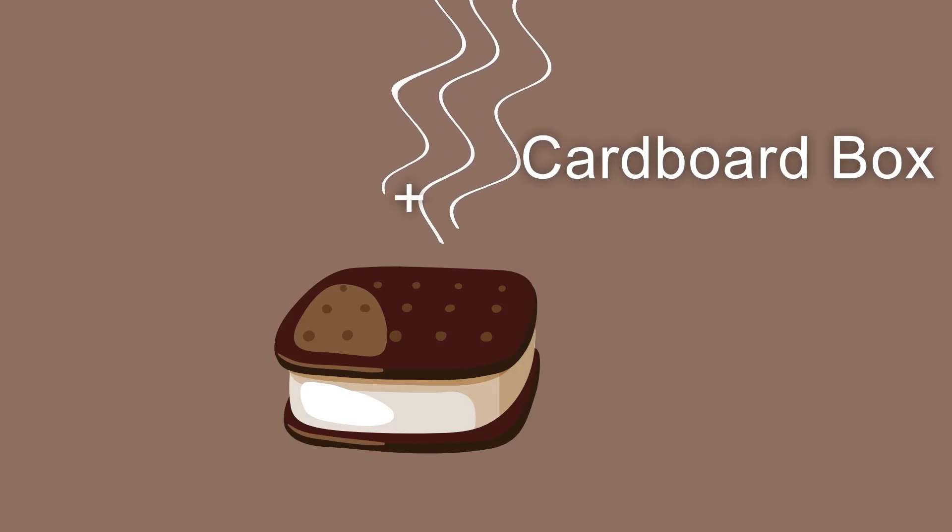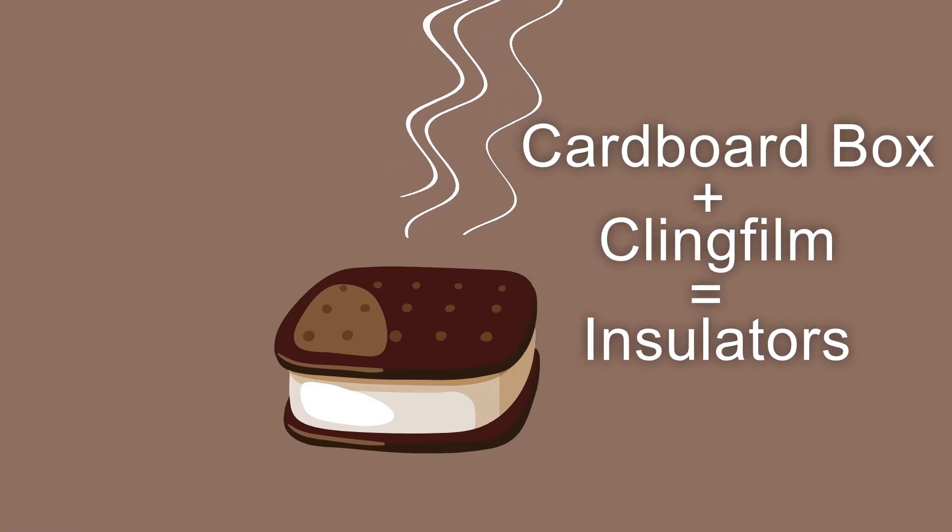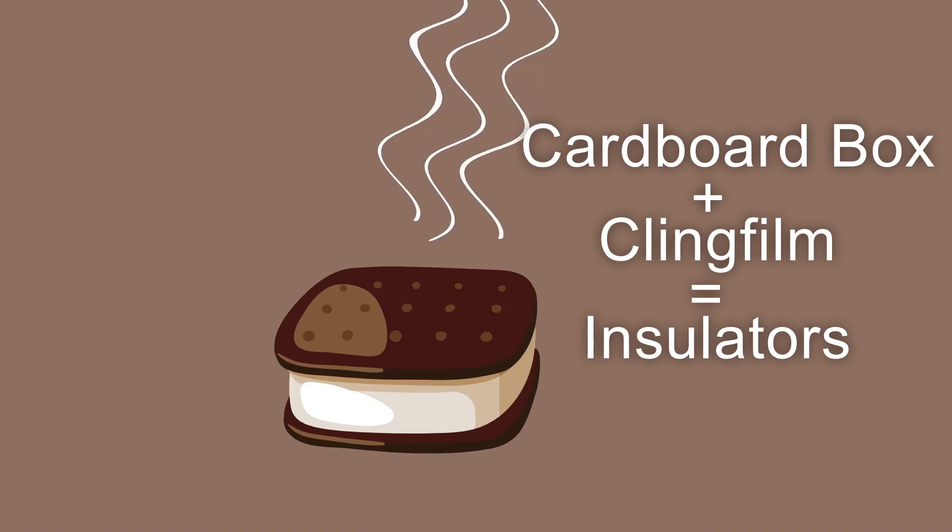The cardboard box and the cling film help insulate the s'mores in the oven and help keep the sun-warmed air trapped inside. As the temperature increases, our s'mores begin to melt.